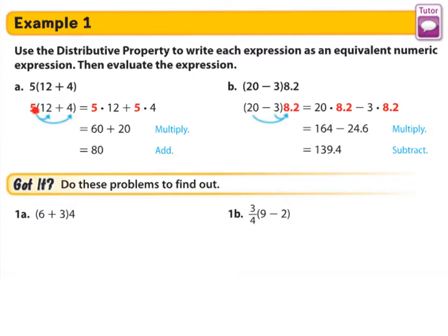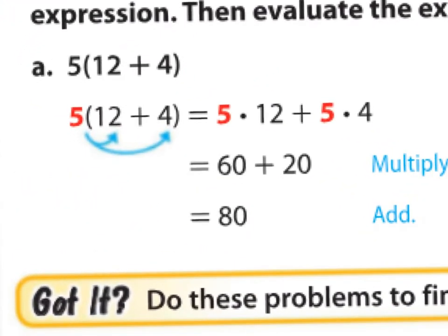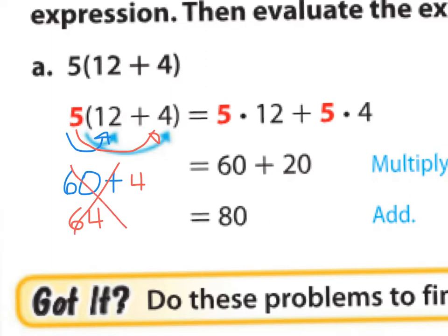Let's see what this looks like. We have 5 times (12 + 4). 5 times 12 is 60, and 5 times 4 is 20. Add the two and you get 80. A common mistake is that people will multiply 5 times 12 and write 60, but forget to do 5 times 4 — they'll just write plus 4 and say the answer is 64. That is incorrect. Remember to multiply the term outside the parentheses with both numbers inside the parentheses.